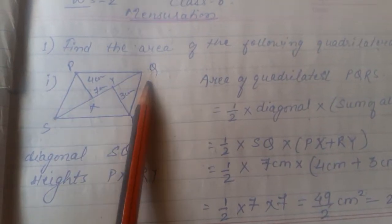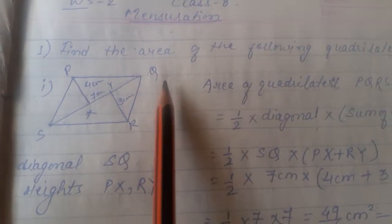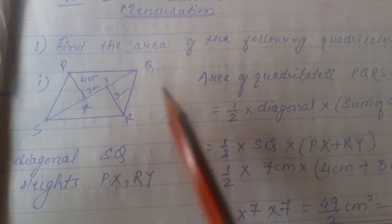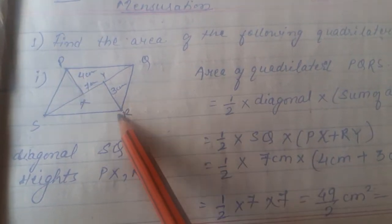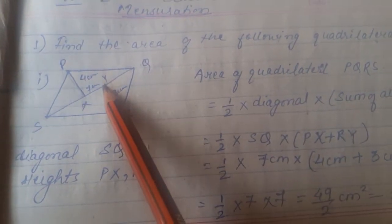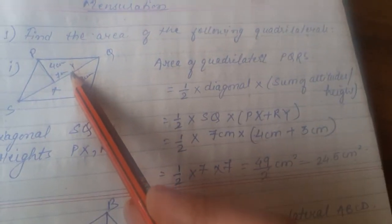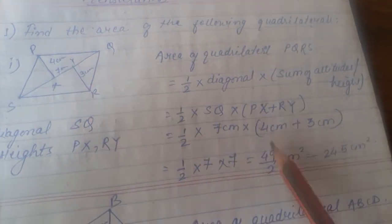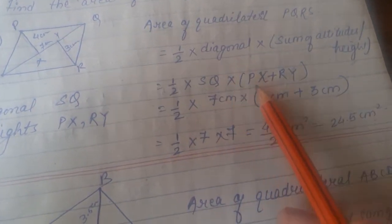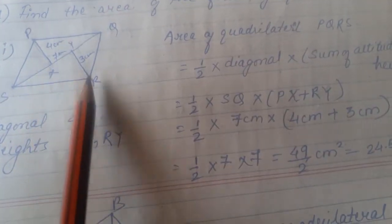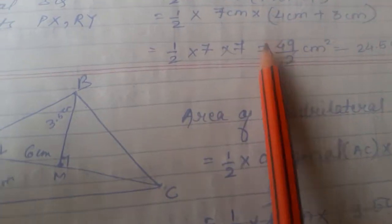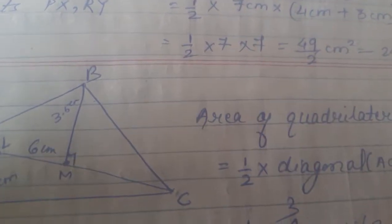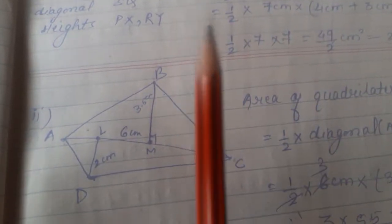Area of the quadrilateral equals half into diagonal into sum of altitudes or heights. The diagonal here is SQ. In the quadrilateral, the diagonal connects opposite vertices, and we take the sum of the perpendicular heights from those vertices to the diagonal. So the formula is: half into SQ into (PX plus RY), where PX and RY are the altitudes.